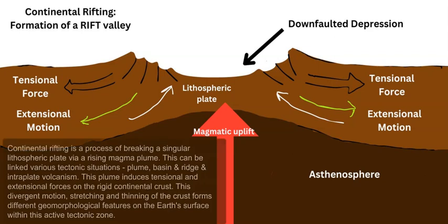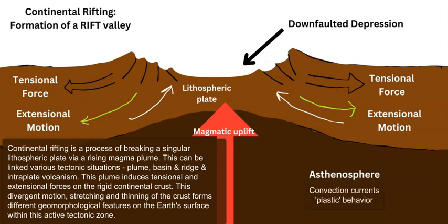In plate tectonics you get the formation of rift valleys and basins — downfaulted depressions caused by the uplifting of the asthenosphere. The rigid lithosphere is being stretched and broken by extensional forces, creating a depression or basin and rift valleys either on both sides or on one side.